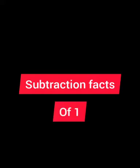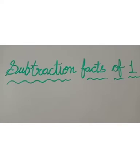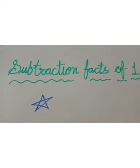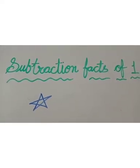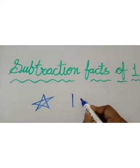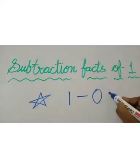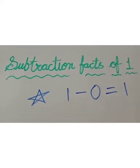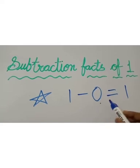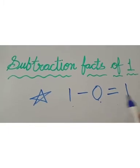Let's see subtraction facts of 1. If I have 1 star and I gave 0 stars to you, how many stars are left with me? I have 1 star, and I gave 0 stars — that is equal to 1. When we subtract 0 from 1, the answer will be 1. Same number.